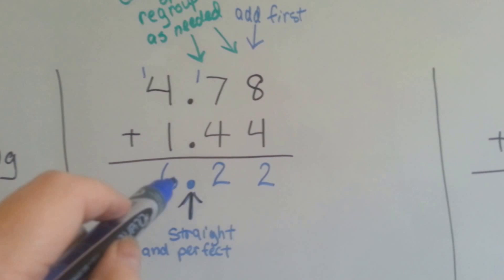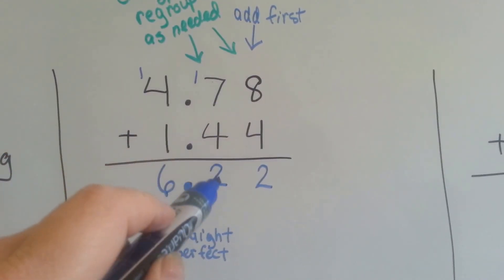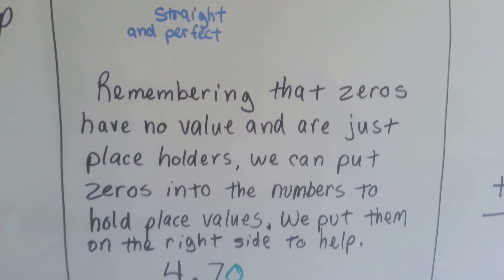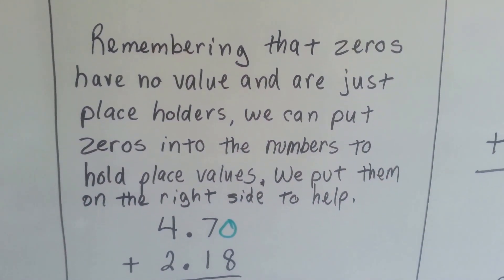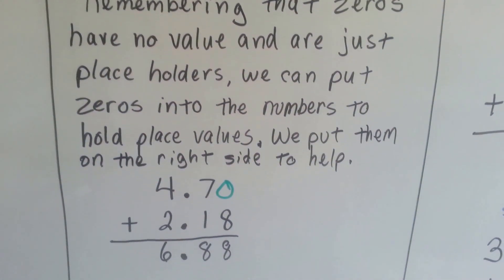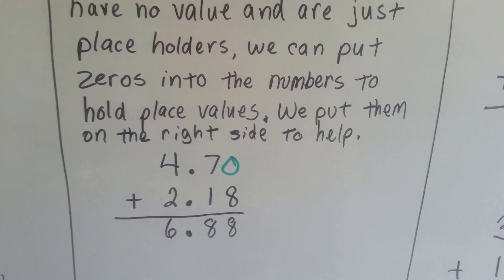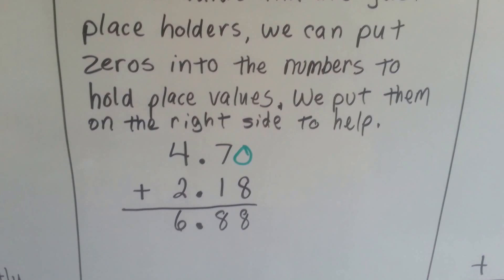That way we added our ones as we were supposed to, our tenths, and our hundredths as we were supposed to. Remembering that zeros have no value and are just placeholders, we can put zeros into the numbers to hold the place values.